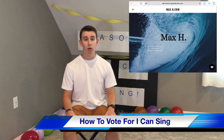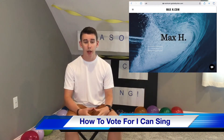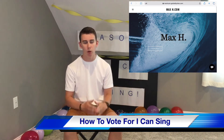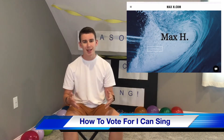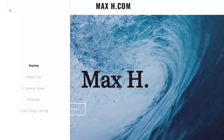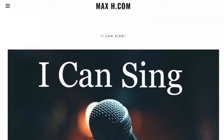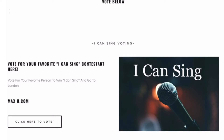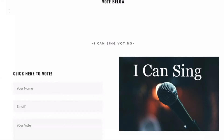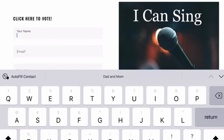Watch that little video right up there to see how you can do it. Here's how it's going to work — I'm going to walk you through it one by one. It'll pop up with the MaxH.com site. Go down to I Can Sing Voting. Once you get to the voting, you'll see a picture of I Can Sing. Scroll down just one and you'll see how to vote. If you want to send your favorite contestant to London, you can do it by voting here. Click the banner that says vote here.